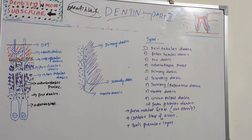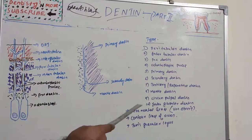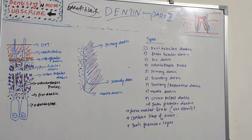Hello everyone, let's continue our dentine sessions. Today's video is about types of dentine. I will be explaining all the types using this picture, and we have some special features of dentine such as incremental lines of von Ebner, contour lines of Owen, and Tomes' granular layer. Let's get into details of all the types of dentine and other features.